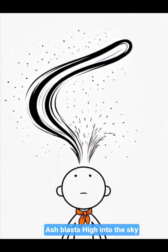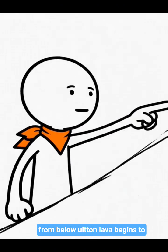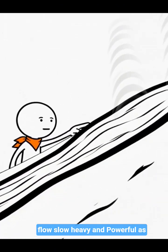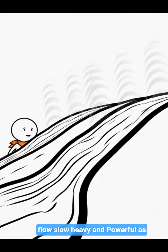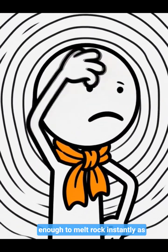Ash blasts high into the sky, lifted by the extreme heat rising from below. Molten lava begins to flow, slow, heavy, and powerful as it moves downhill. Even from far away, the heat is intense, hot enough to melt rock instantly.